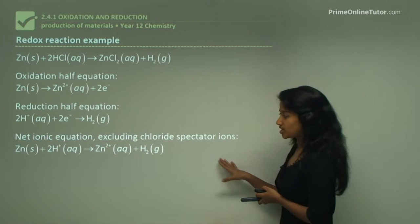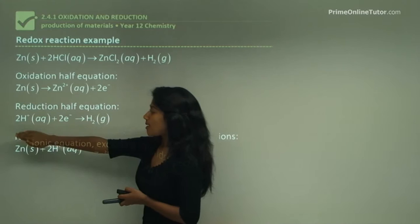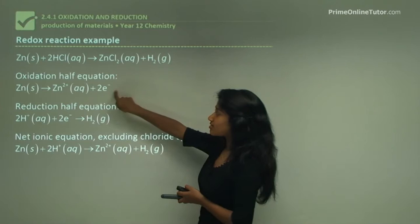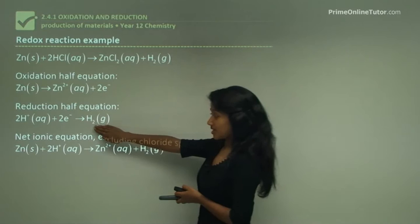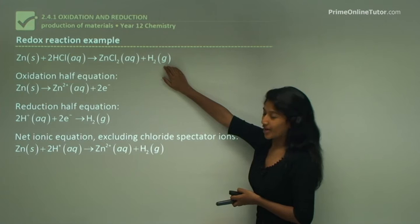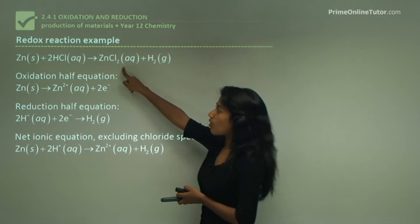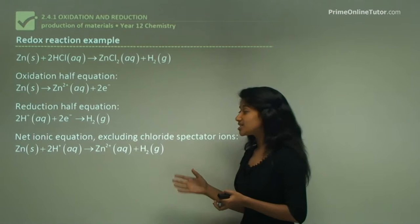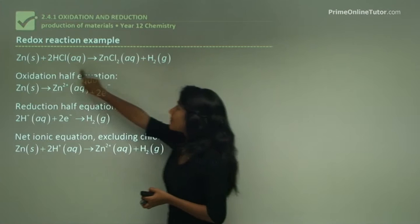The net ionic equation, excluding the chloride spectator ions, is obtained by adding the two half equations together. You add zinc plus the hydrogen ion on one side, cancel out the electrons because there are equal amounts, and get zinc ion plus hydrogen gas. This is the net ionic equation. The difference from the full chemical equation is that chloride ions are excluded because they are spectator ions - they don't get involved in the transfer of electrons, though they are still part of the reaction.